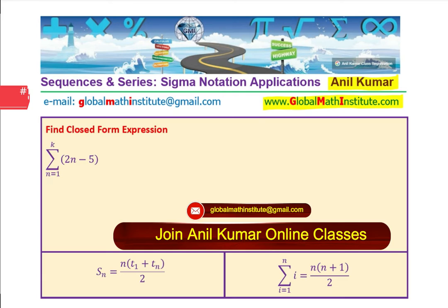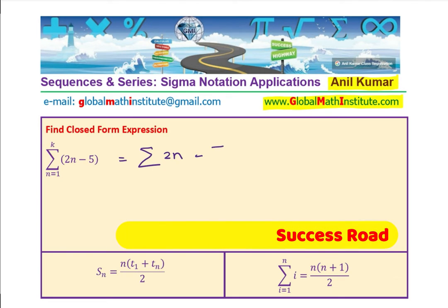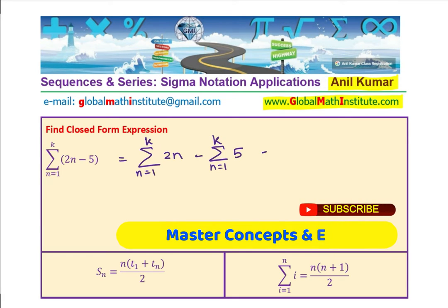So we can write the given expression as equal to sum of 2n and sum of minus 5, where n index changes from 1 to k. Is that clear to you?